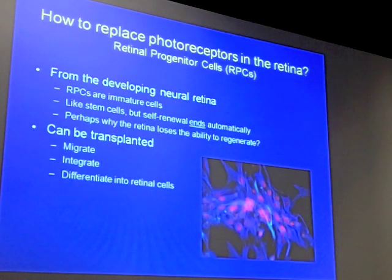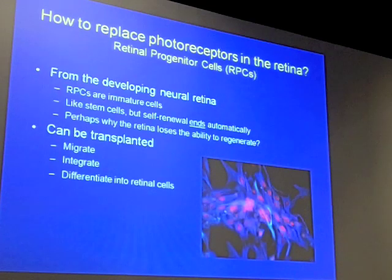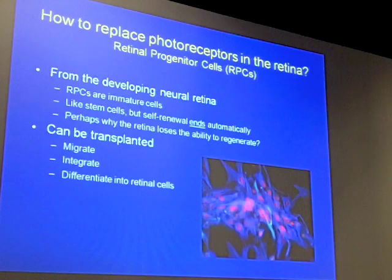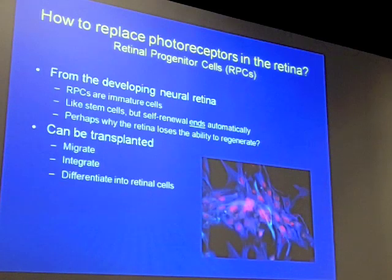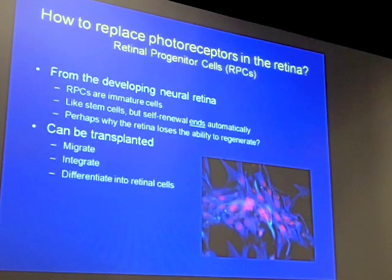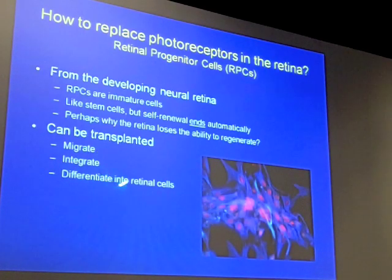How would you replace a photoreceptor? You need a cell that's capable of becoming a new photoreceptor — the cell that makes the photoreceptor in the first place. We all started with no photoreceptors as a little ball of cells as an embryo, and at some point we developed eyes, and the eyes developed photoreceptors. That was done by something called a retinal progenitor cell. This is the type of stem cell normally recruited by the body to make photoreceptors, and we harvest these from the early immature neural retina. They can migrate and integrate into the diseased retina and make photoreceptors.